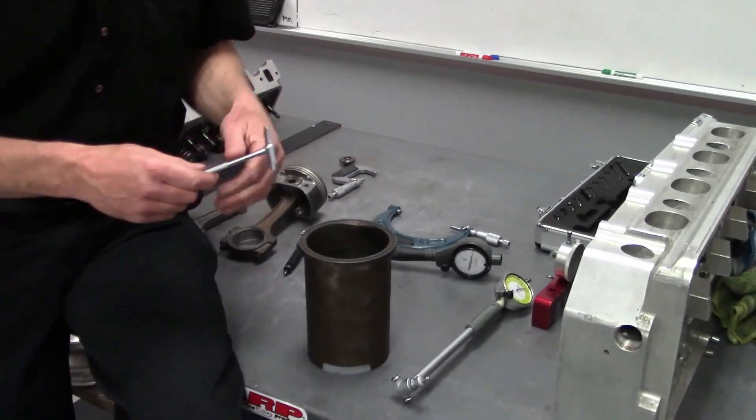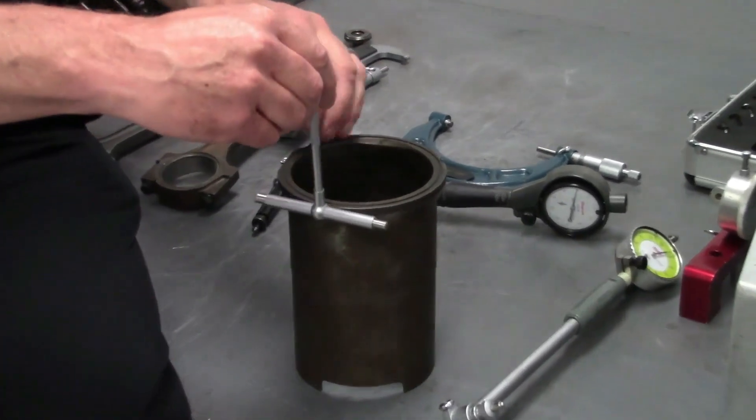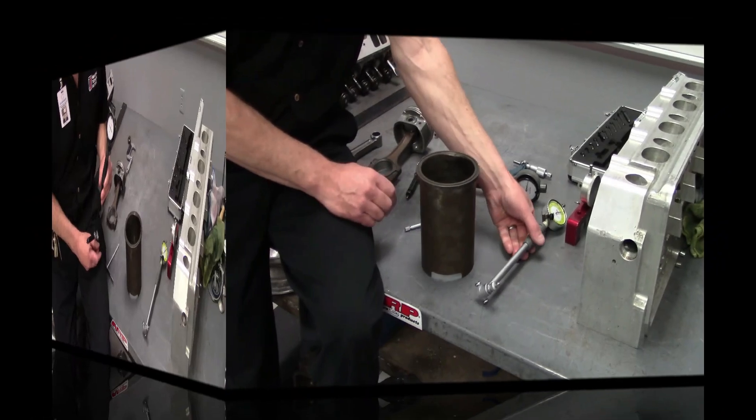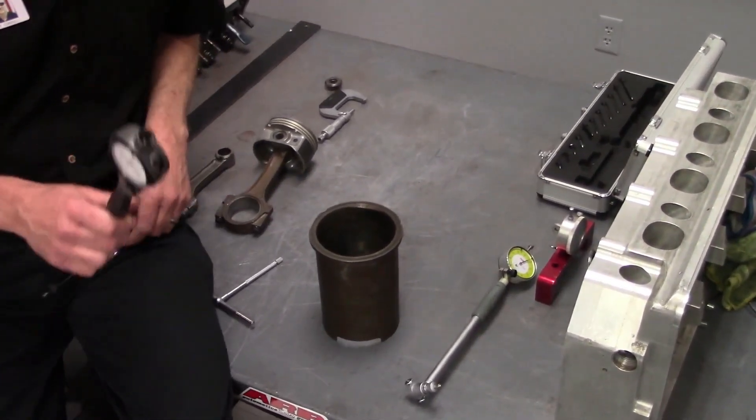The two things that we're going to check are obviously taper and out of round. For taper, we're going to check the bore up here at the top, and then we're going to go to the middle. We're going to be using a dial bore gauge.